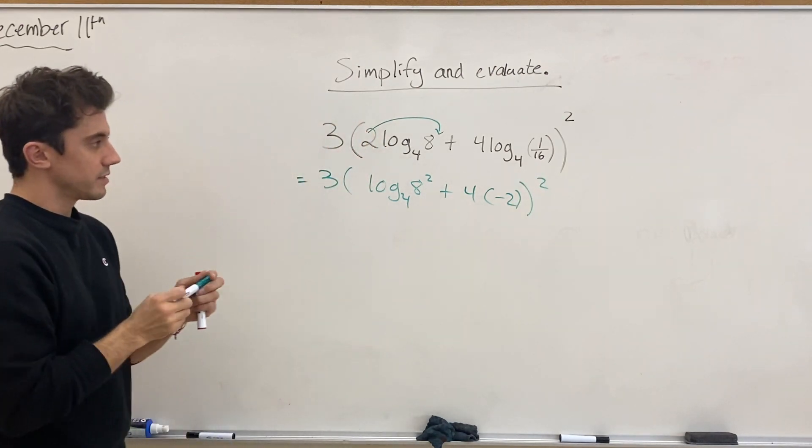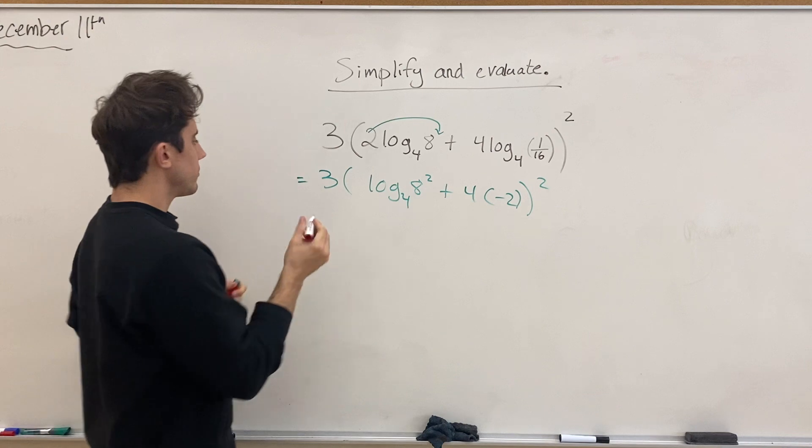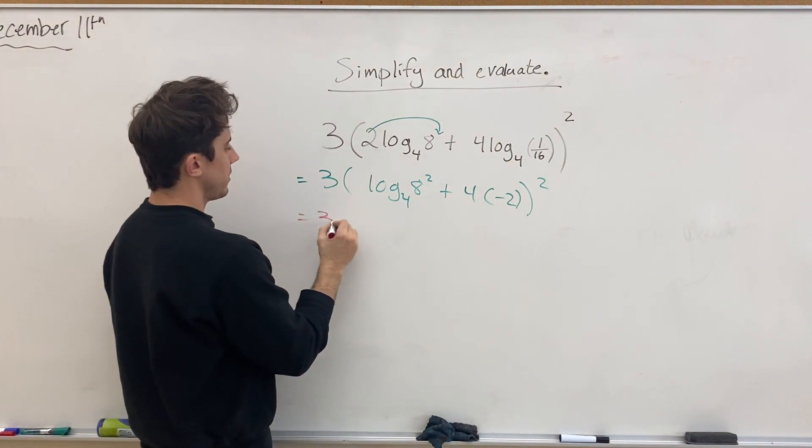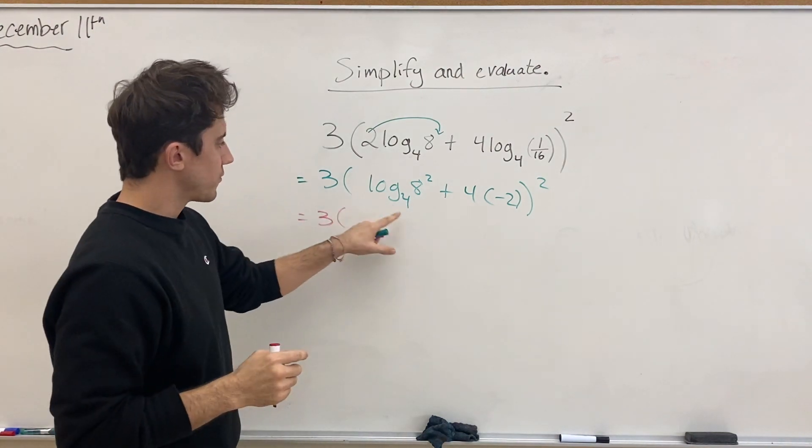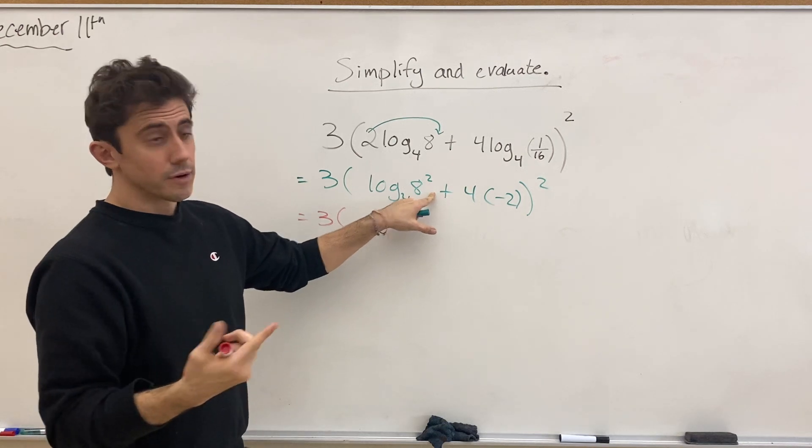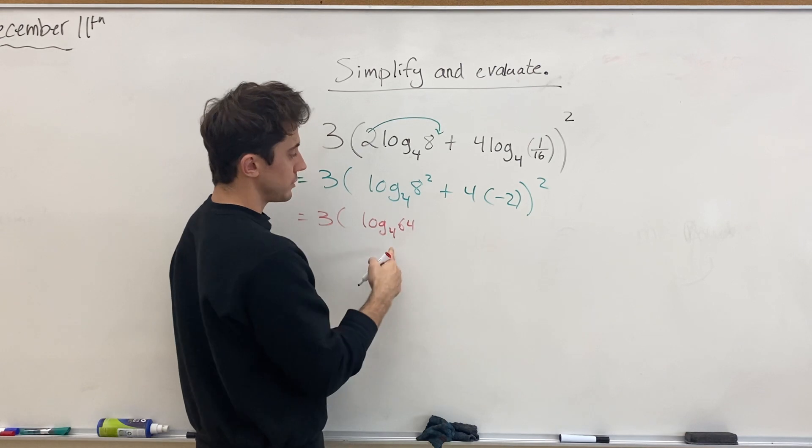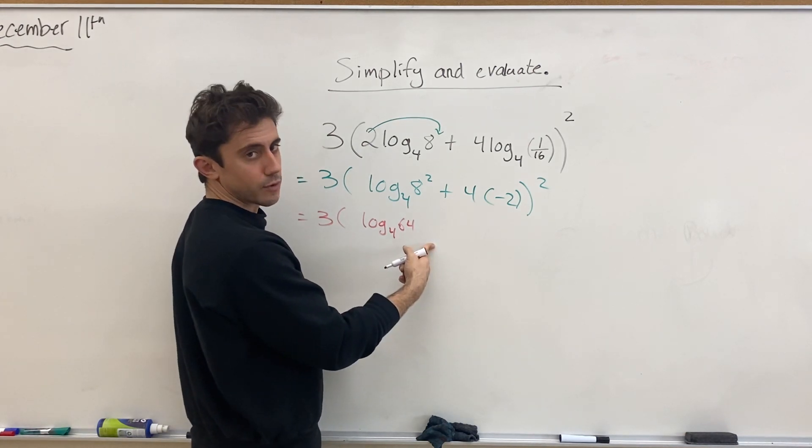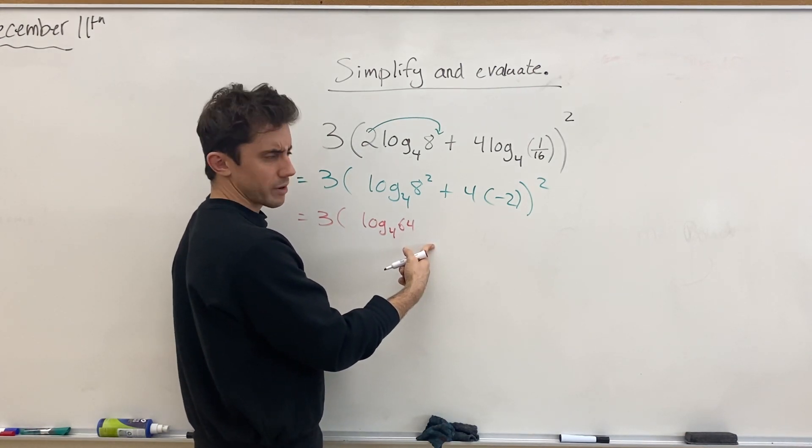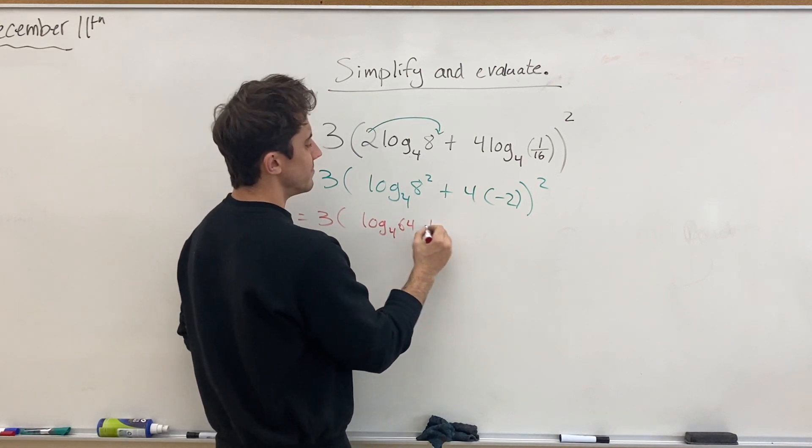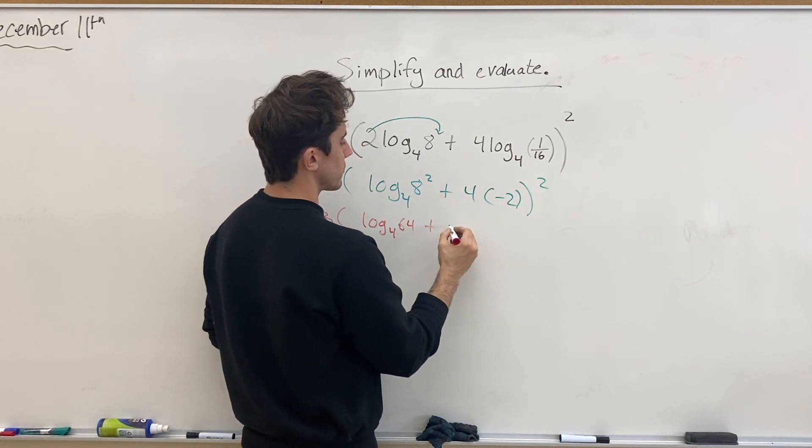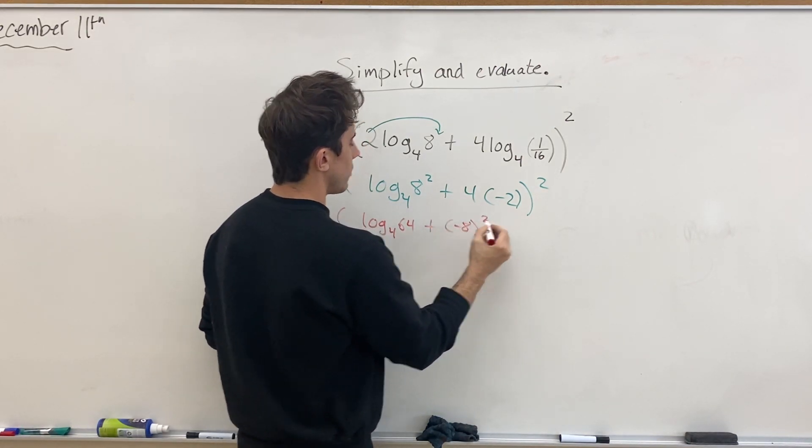Of course, all within the bigger brackets. And now, in the next step, we can have 3 times log base 4 of 8 squared is 64, right? So we can write that as log base 4 of 64, which you might recognize a bit more right away. Plus 4 times negative 2 is, of course, negative 8 all squared.